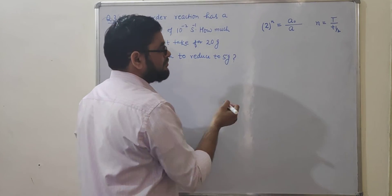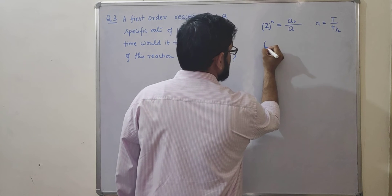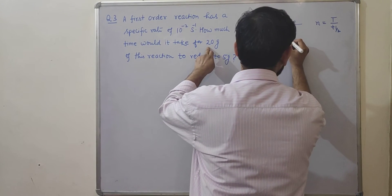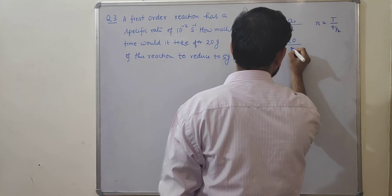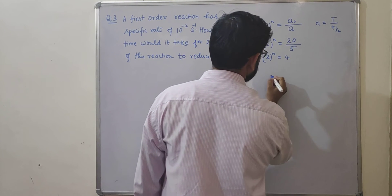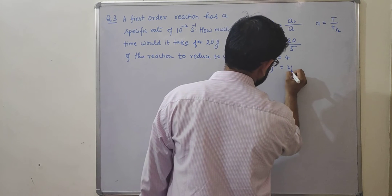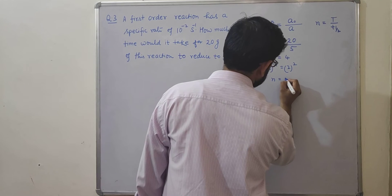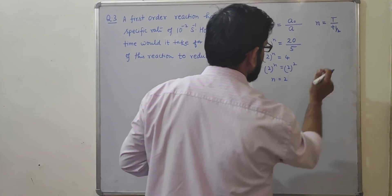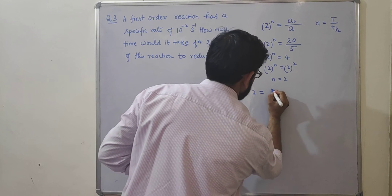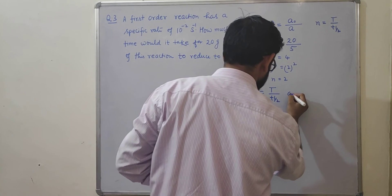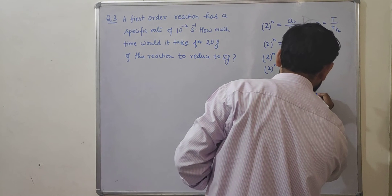In the given problem, 2ⁿ = A₀ / A = 20 / 5 = 4. We can write 2ⁿ = 2², so n = 2. Putting the value of n into the equation, we get 2 = T / T½, or T = 2 × T½.